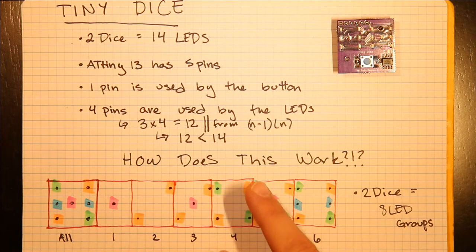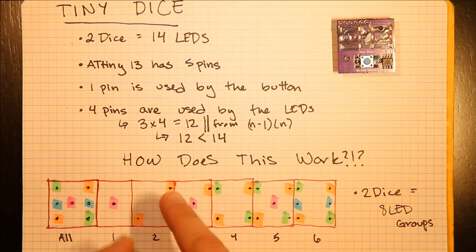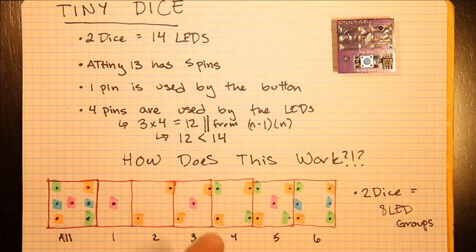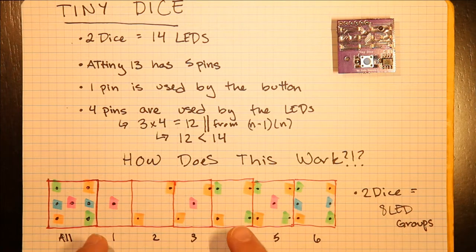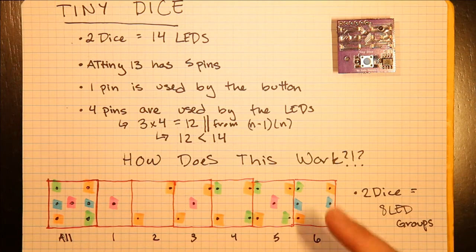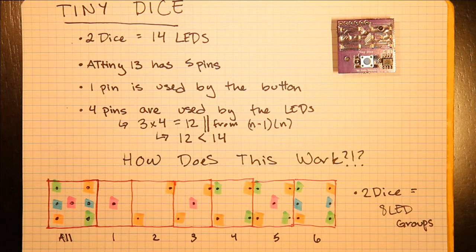Four is a combination of the ones you used for two and then the opposite of the ones you used for two. Five is just four and one, and then six is four plus the centered horizontal pair.